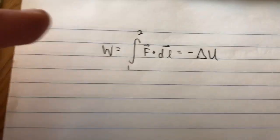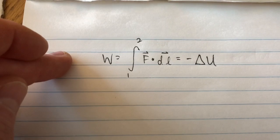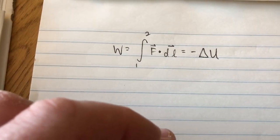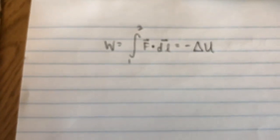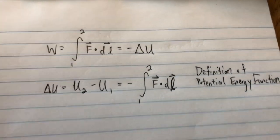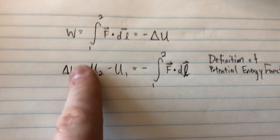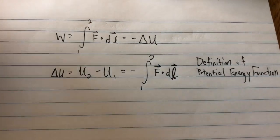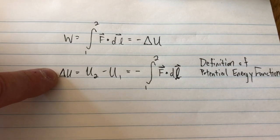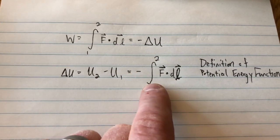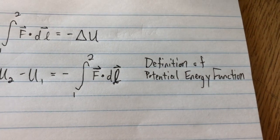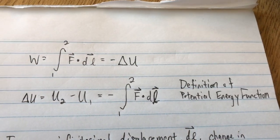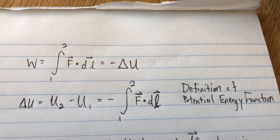If you start at the top of a hill — say you're a snow skier — gravity does work to bring you down to the bottom. In going from top to bottom you are losing potential energy, and how much you change is the negative of the work done. The change in potential is the ending amount minus the beginning amount, and it equals the negative of the work done. This is the definition of the potential energy function.